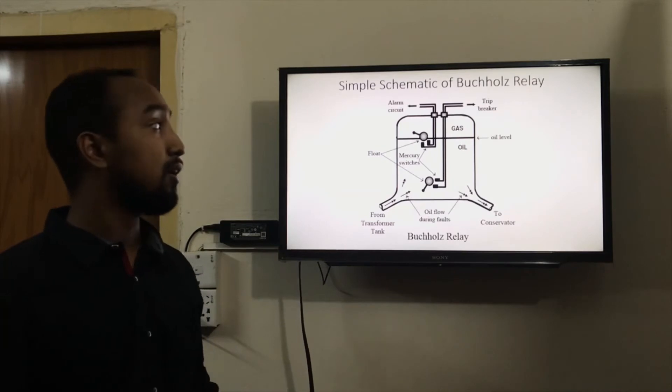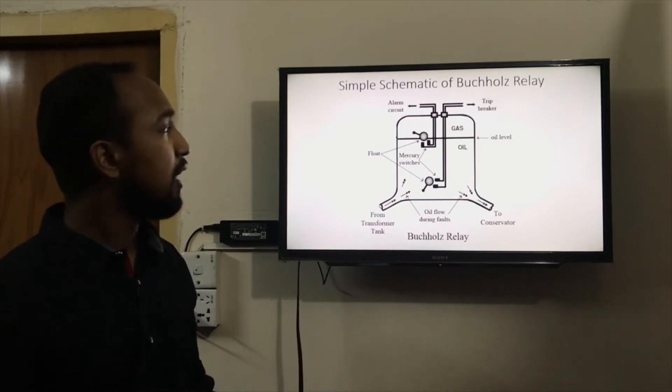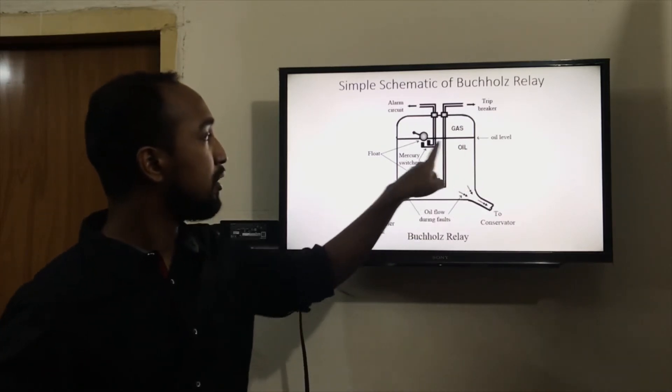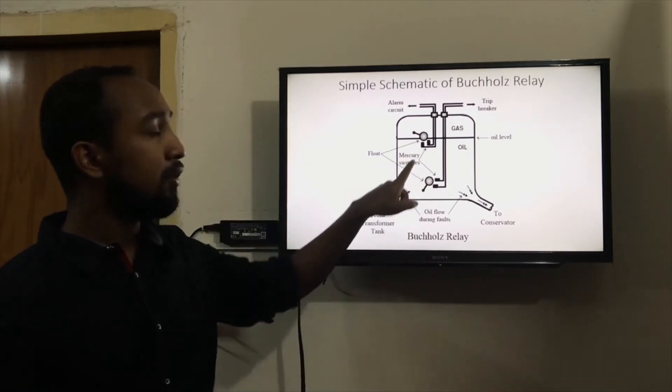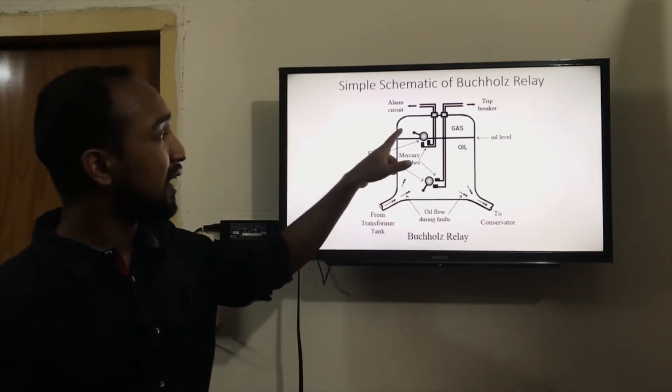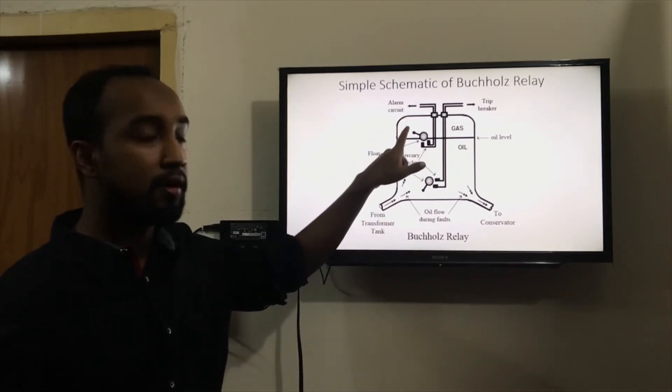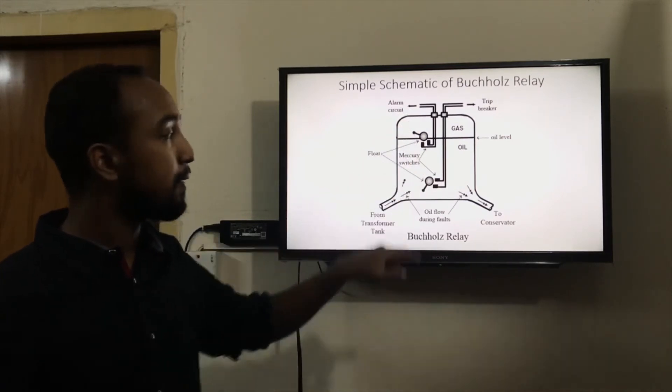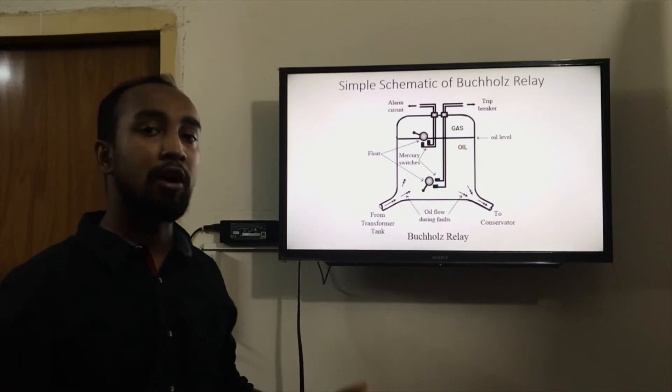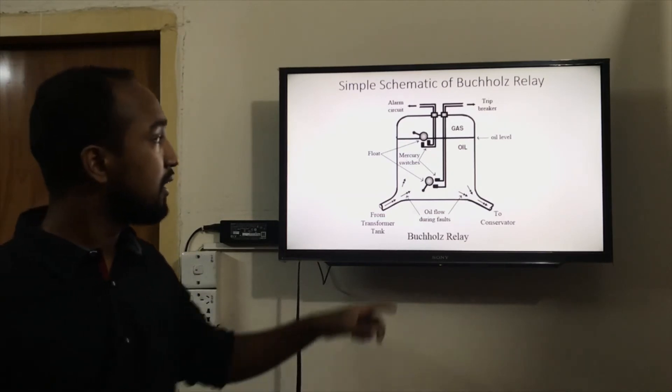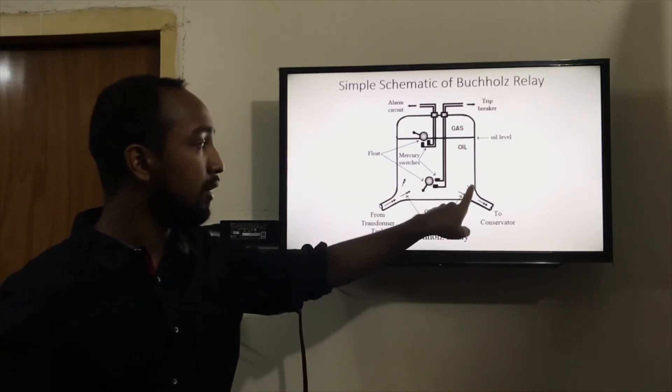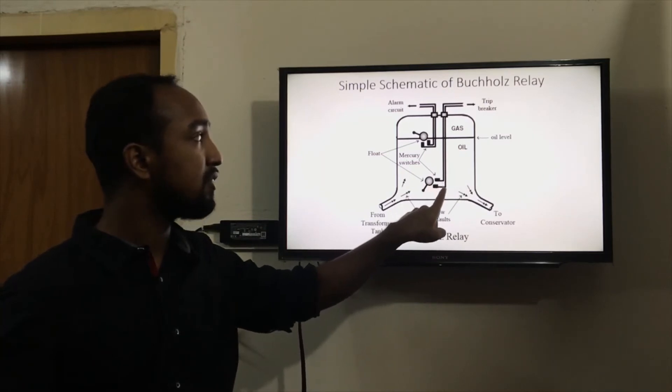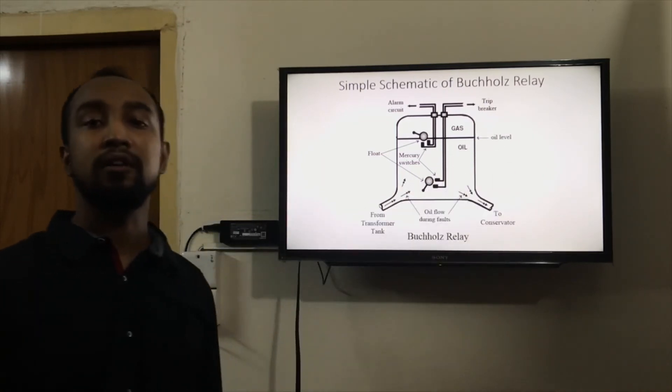Here is a diagram of a simple Buchholz Relay. Here you can see the oil level and two floats. During minor faults, the gases accumulate in the upper chamber and these floats activate the alarm circuit. But during major faults like oil leakage and winding short circuit, this oil level comes down here and this float activates the trip breaker, completely isolating the transformer.